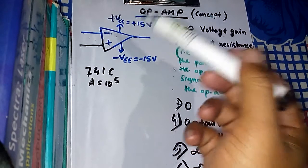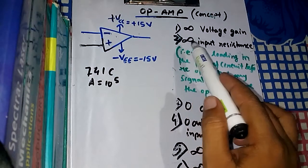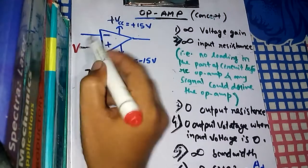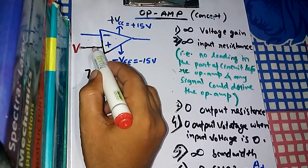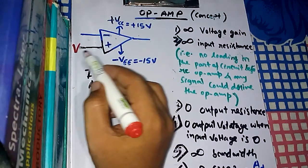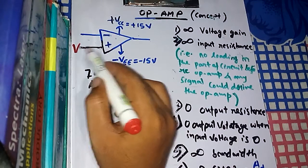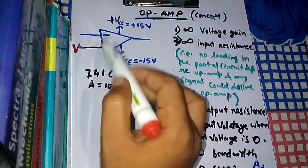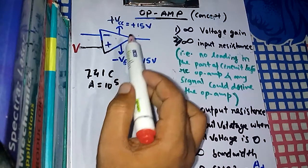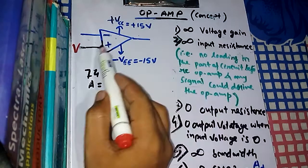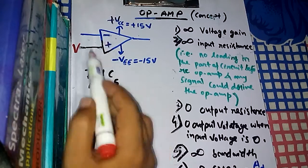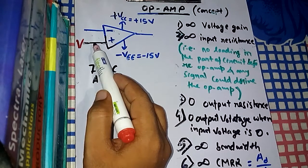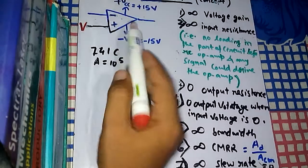The second characteristic is infinite input resistance. Suppose we give a voltage V as input at the positive terminal. This voltage will drive a current according to the circuit resistance. Since this is an ideal operational amplifier, it has infinite input resistance. From Ohm's law, V = I × R. With infinite resistance, I = V / ∞ = 0, so the current is zero.